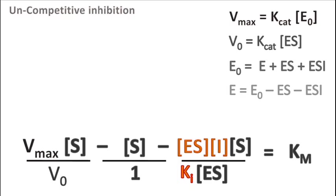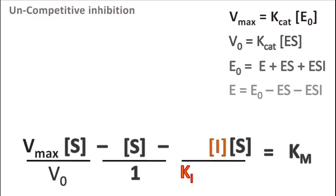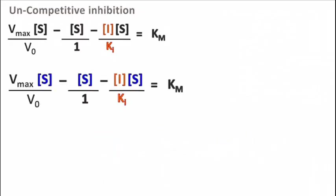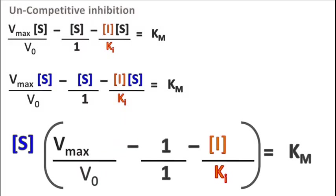So the equation for Km now looks like Vmax into S upon V0 minus Km, minus S into I upon Ki. Taking S common, we get S into bracket Vmax upon V0 minus 1 minus I upon Ki.